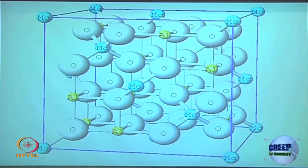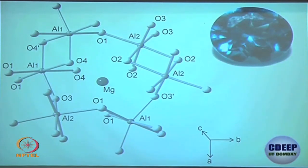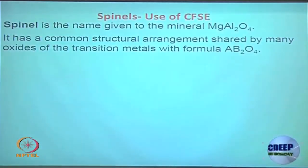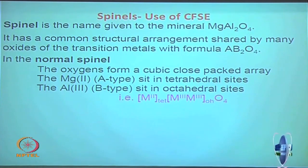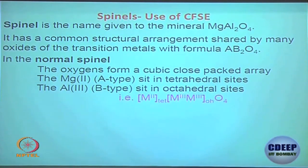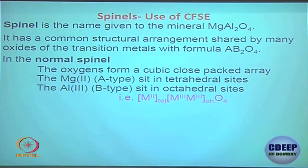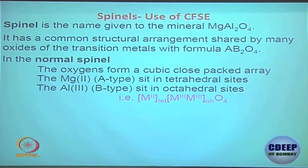In the normal spinel, both B metals (the +3 oxidation state metals) are in octahedral geometry, and the A metal (+2) is in tetrahedral geometry, with four oxides present. You have to look carefully at the crystal structure to verify this — there should be no ambiguity. Both the +3 oxidized metals are in the octahedral state, the +2 metal is in tetrahedral geometry, and four oxides are there. This is normal spinel.